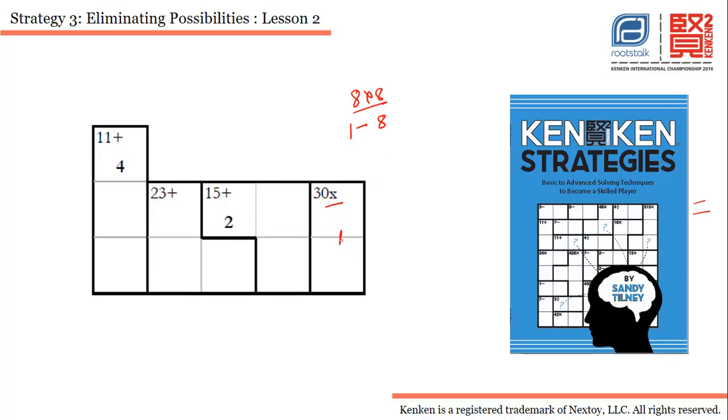To fill these two cells, the only possible combination is 5 and 6. There is no other combination possible. I don't know about the order, so I'm writing outside the cage.